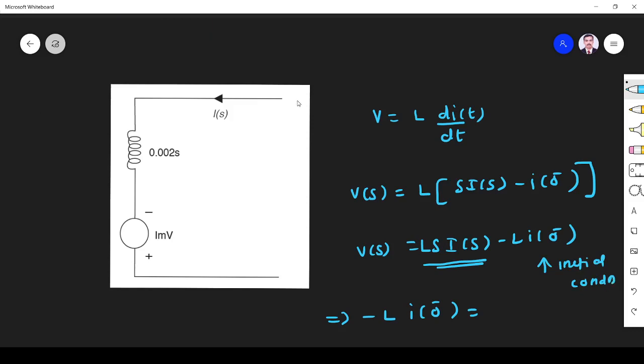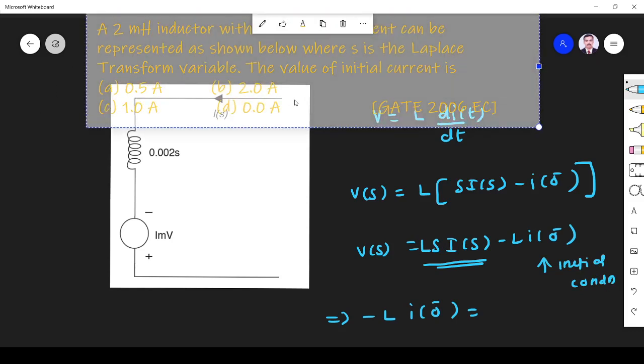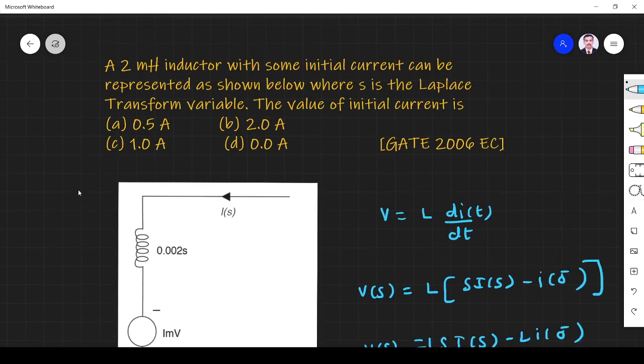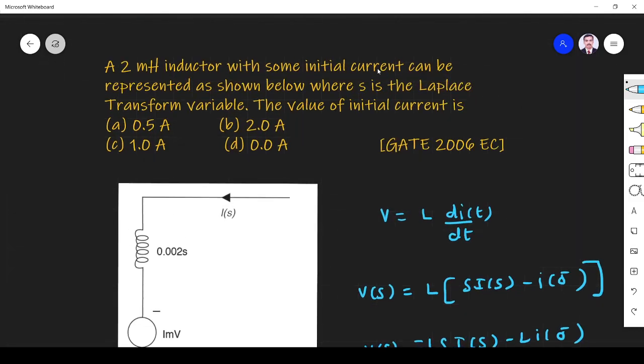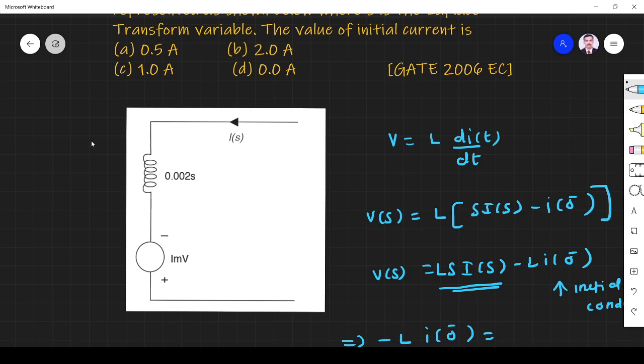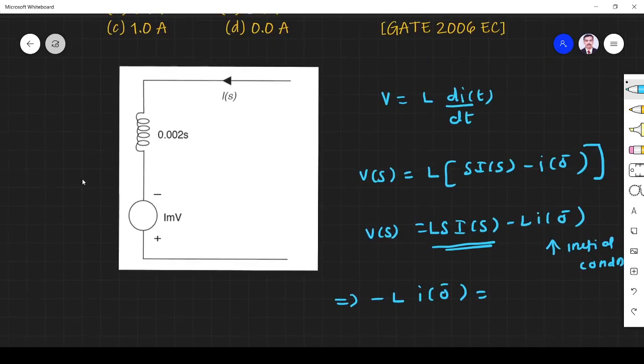So in the question they have given inductor with some initial current. So this is what they have given. So L I of 0 is equal to...